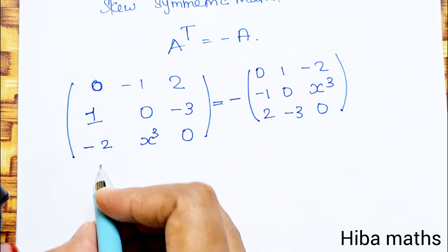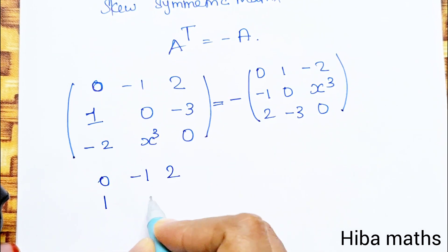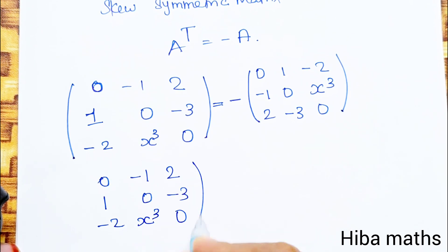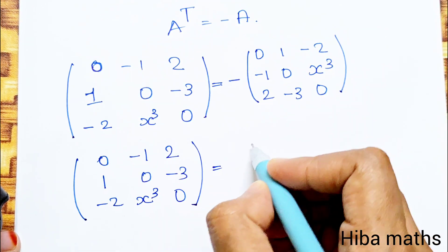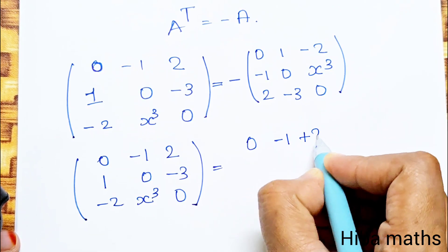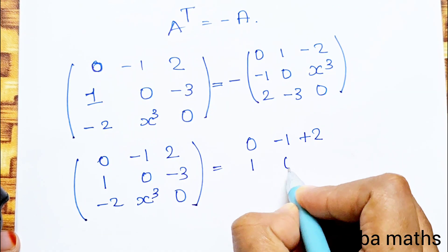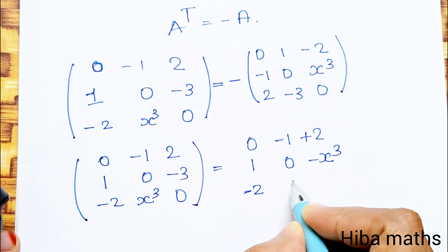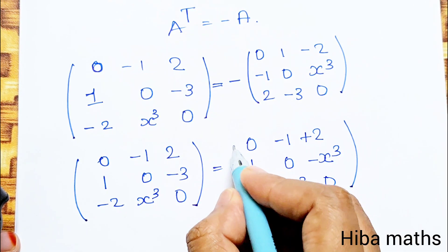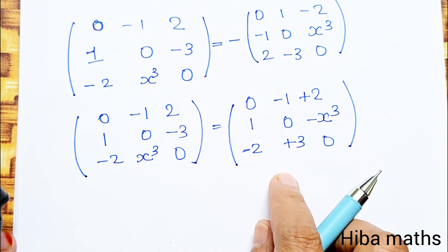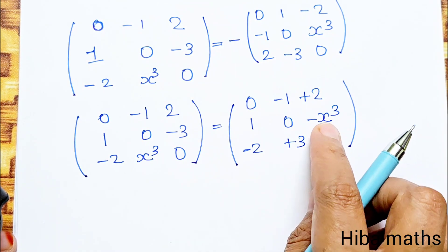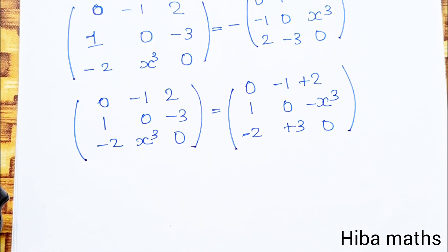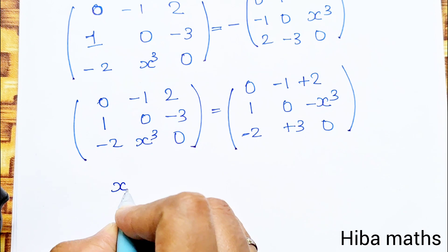Now comparing the two matrices element by element. The minus distributes inside: we get [0, -1, 2; -1, 0, -X³; -2, 3, 0]. Comparing corresponding entries: X³ equals 3, and minus X³ equals minus 3 — the minus-minus cancels and confirms the value. We compare X to find X³ = 3.